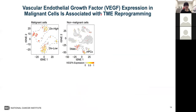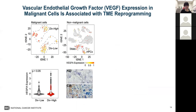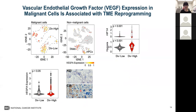Consistently, VEGFA was mainly expressed in malignant cells rather than non-malignant cells, and expression was much higher in high-diversity tumors than low-diversity tumors. We further validated the expression of VEGFA in low-diversity and high-diversity tumors using immunohistochemistry analysis. The increased VEGFA expression is in parallel with elevated levels of HIF-1A and hypoxia signaling.